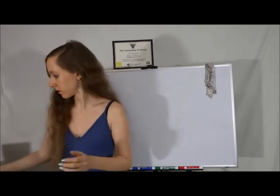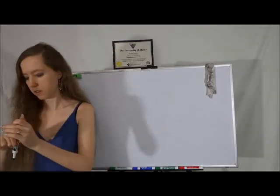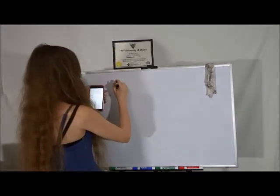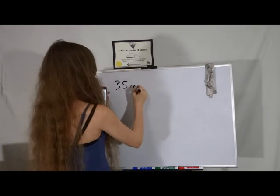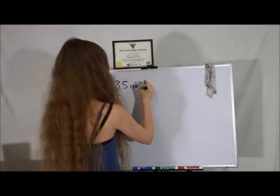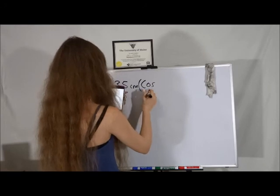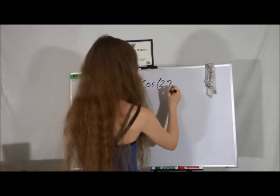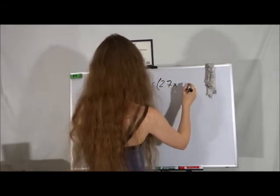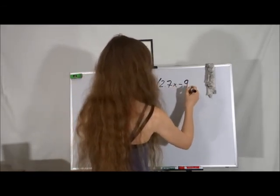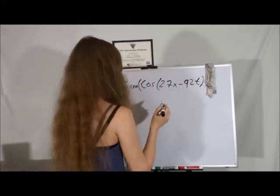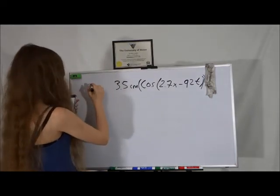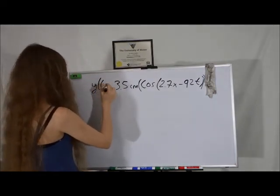So let's write out our equation. We have 3.5 centimeters cosine 2.7x minus 92t. And this is our y as a function of x and t.